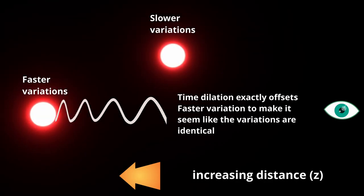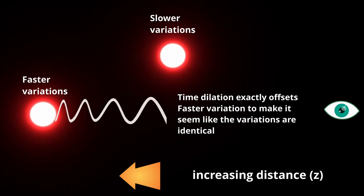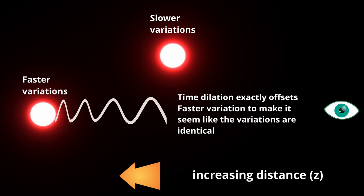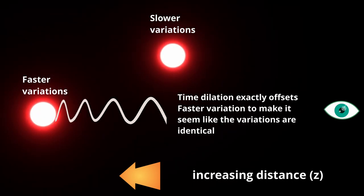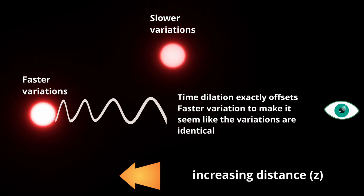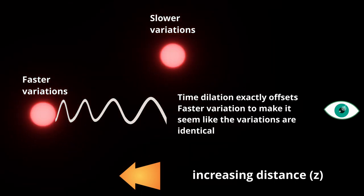Another alternative he suggests is that the timescale of quasar variations decreases by a factor of 1 plus z towards high redshift by some as yet unspecified physical process, to exactly cancel out the time dilation effect. This would require an almost cosmic conspiracy to achieve the required fine tuning and would make this almost impossible.